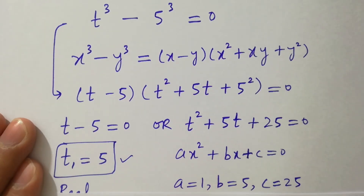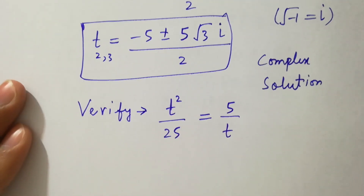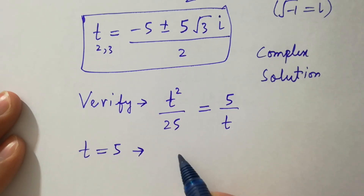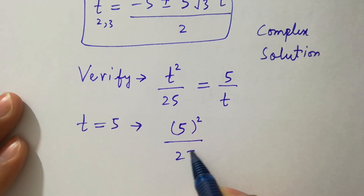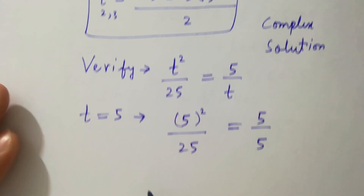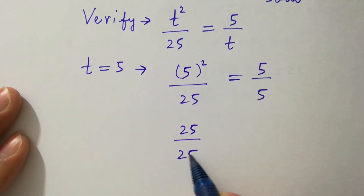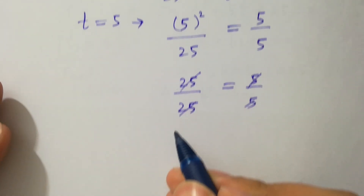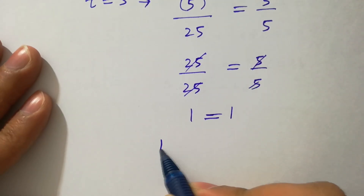Now put the value of t equal to 5, our first real solution. We have 5 squared over 25 equal to 5 over 5. 5 squared is 25 over 25 equals 5 over 5, and the 5s cancel, giving us 1 equal to 1.